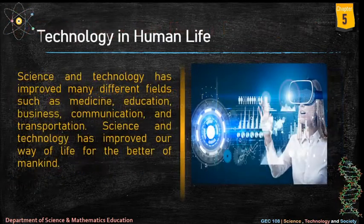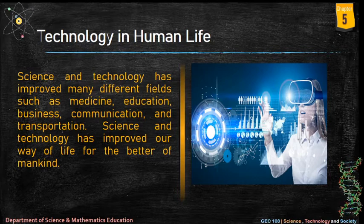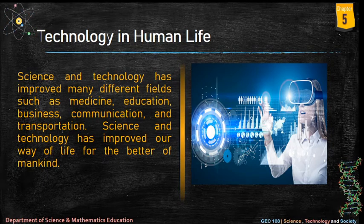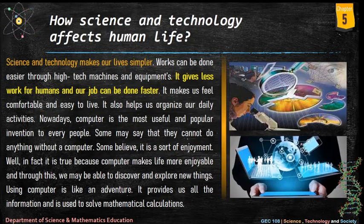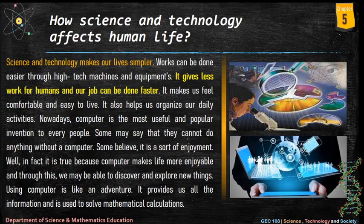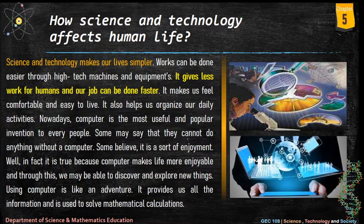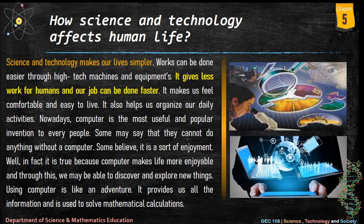Technology in human life: science and technology has improved many different fields such as medicine, education, business, communication, and transportation, improving our way of life for the better of mankind. Science and technology makes our lives simpler — work can be done more easily through high-tech machines and equipment, giving less work for humans and getting jobs done faster. It makes us feel comfortable and easy to live, and helps us organize our daily activities. Nowadays, the computer is the most useful and popular invention.